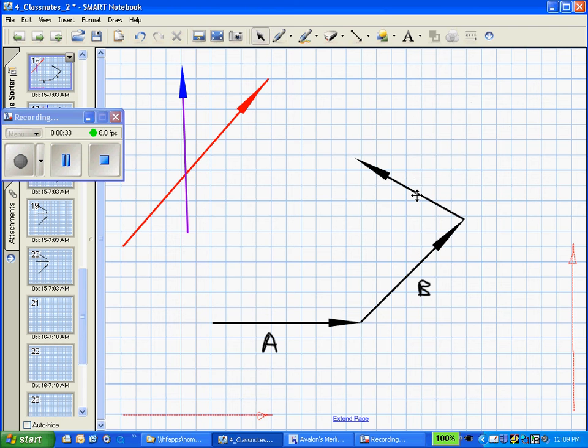When we add vectors A plus B plus C, we obtain the resultant vector, which is given by the red vector, and we'll call the resultant vector, vector R.